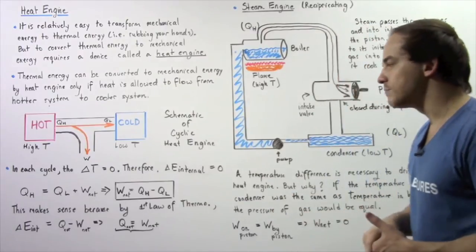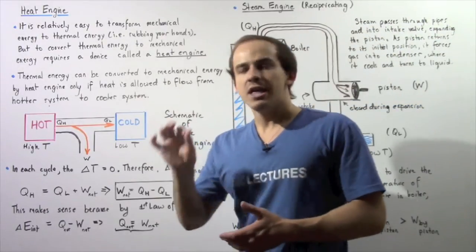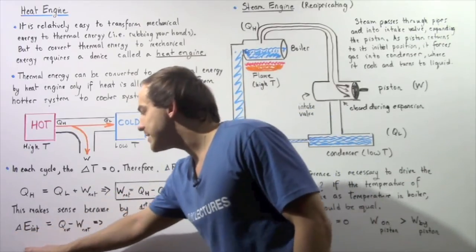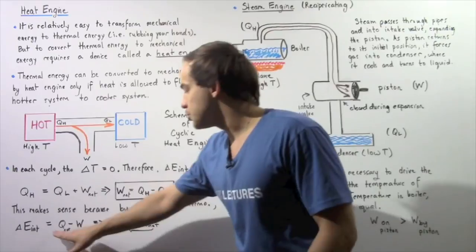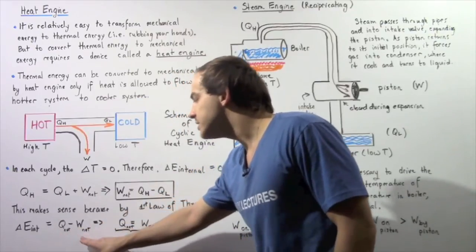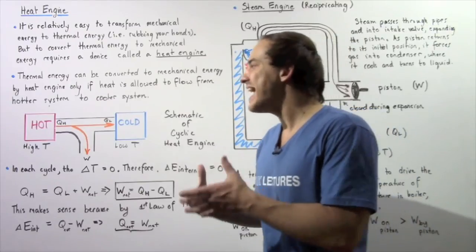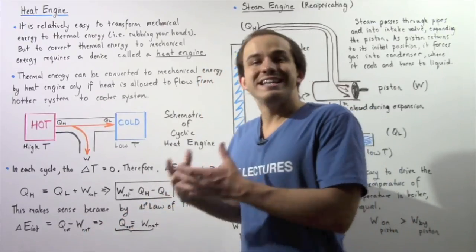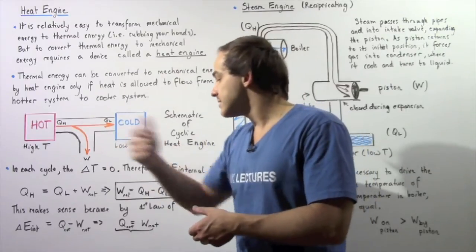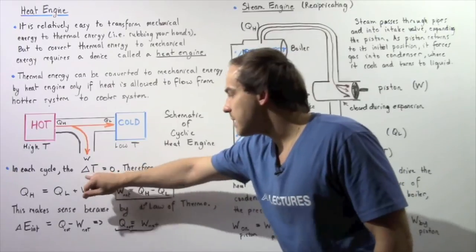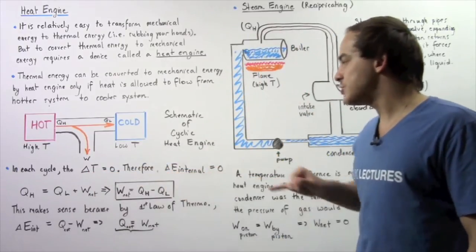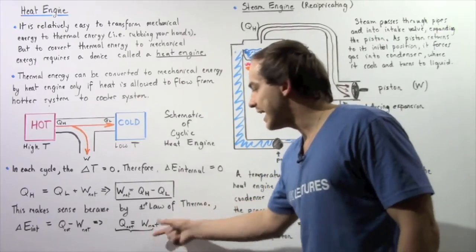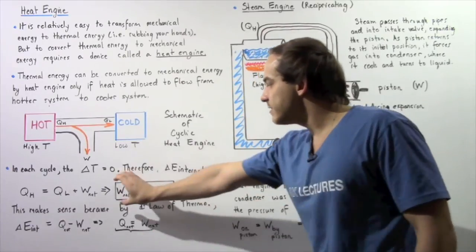Let's verify this using the first law of thermodynamics. The change in internal energy of our closed system equals Q_net minus W_net, where Q_net is the net energy flow into our system. Because the change in temperature is zero, the change in internal energy is zero, so Q_net equals W_net. The net work done equals the net heat flow — exactly consistent with our earlier result.